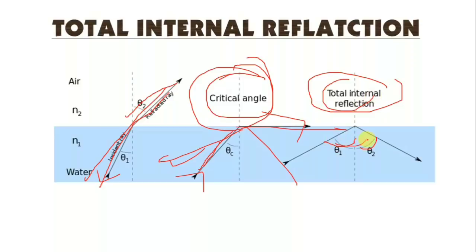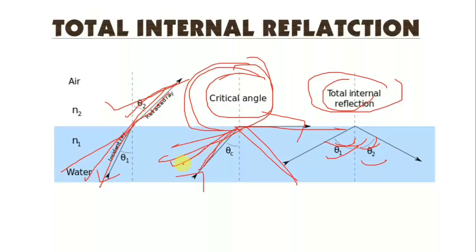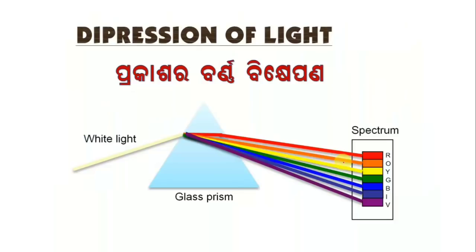Now let's call it theta 1 and theta 2. The total internal reflection is the same as the critical angle, and the total internal reflection is the same as theta 1 and theta 2. The total internal reflection relates to the depression of light.